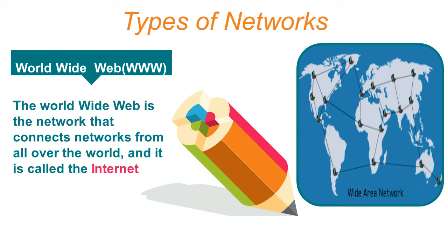World Wide Web (WWW): The World Wide Web is the network that connects all countries together — all the networks from all over the world — and it is called the Internet. So: TAN is one room, LAN is one building or more in a small area, WAN connects like a city, NAN is a national network, and the World Wide Web is an international network.